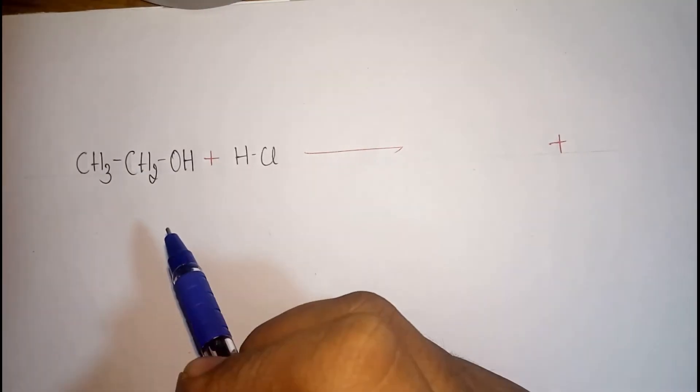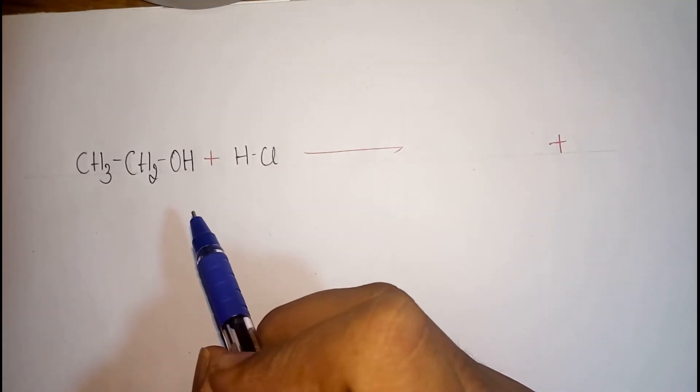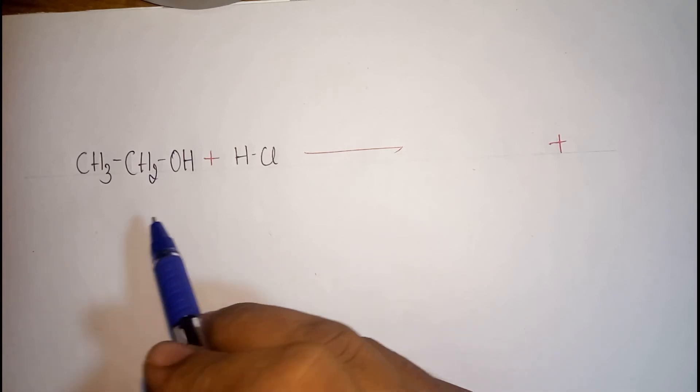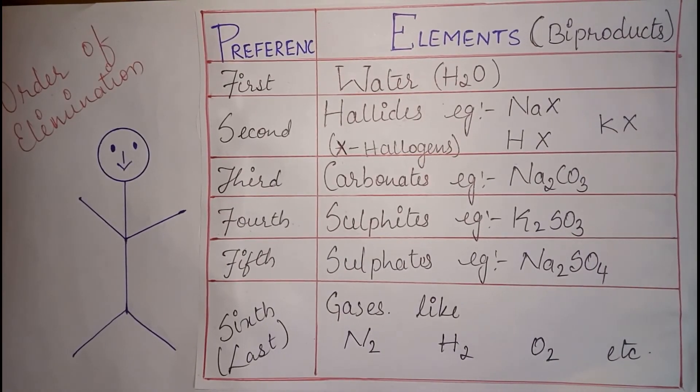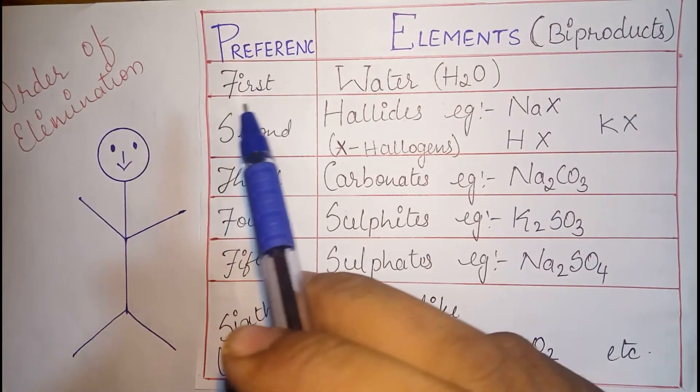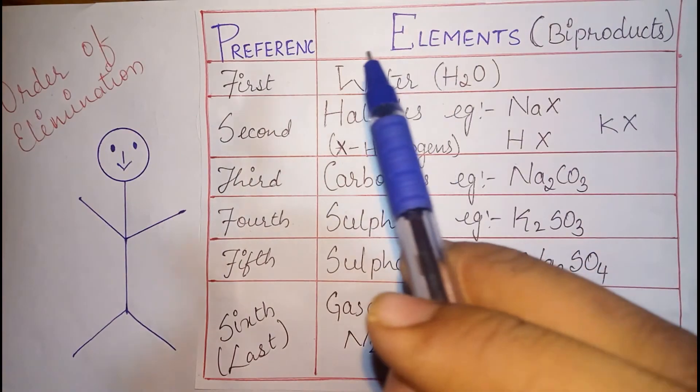Consider the previous example of preparation of ethyl chloride where ethyl alcohol reacts with HCl and forms ethyl chloride as the main product. To solve this we will use table of order of elimination now. As per the table, first preference while eliminating should be given to water.